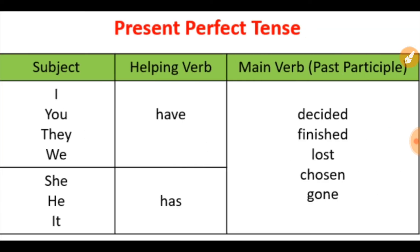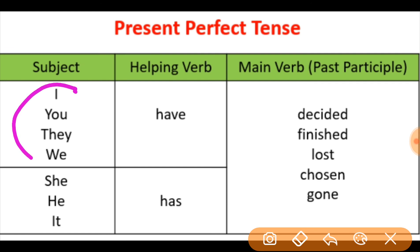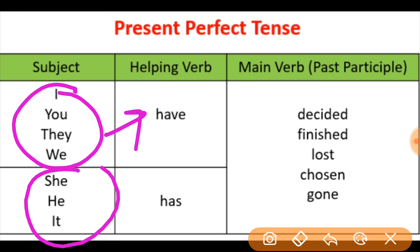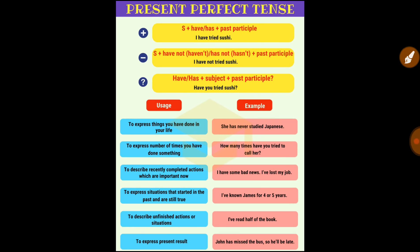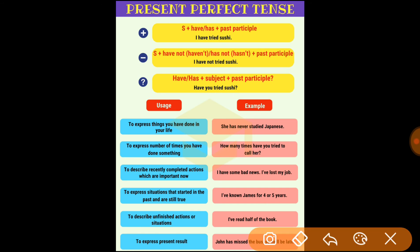Present perfect rule recap: with I, we, you, they — use 'have'; with he, she, it — use 'has.' The main verb is the past participle — the third form. In positive sentences: subject first, then has or have, then third form. In negative sentences: subject, then has or have plus not, then third form. In interrogative sentences: has or have comes first, then subject, then third form. For example: 'She has never studied Japanese.'